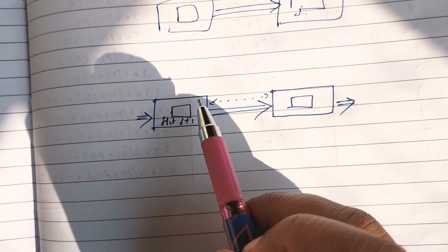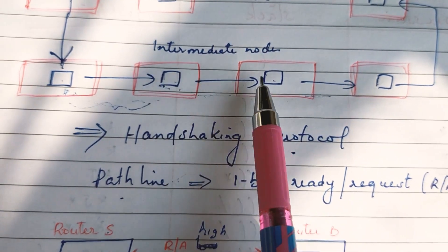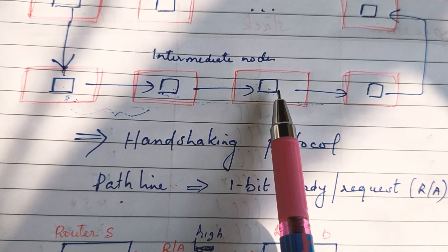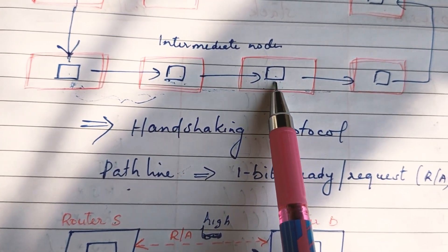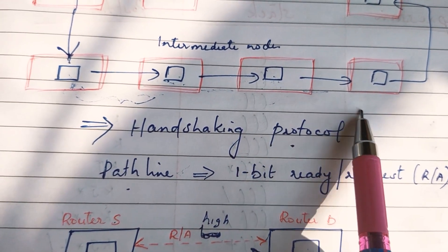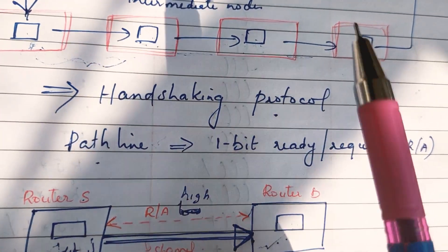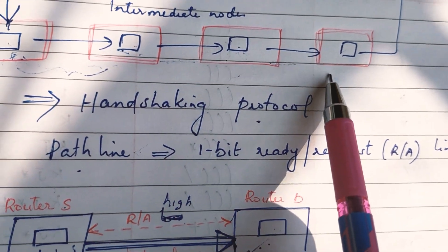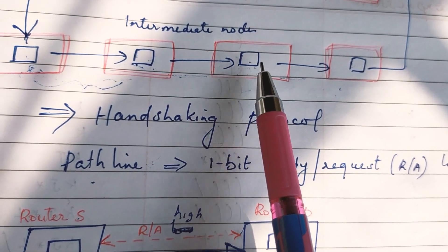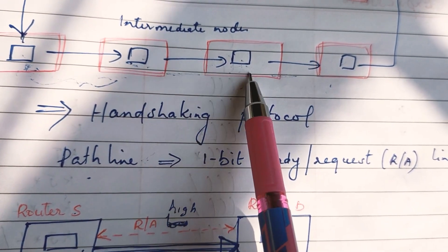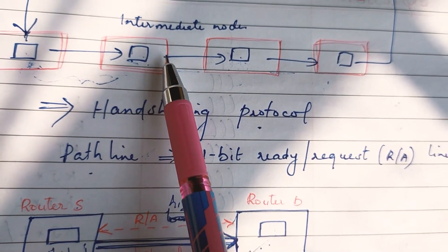Next, we will transmit the next flit — flit J plus 1. We received the next packet and will send it to the destination. Then we remove the flit from the buffer and send the next packet.